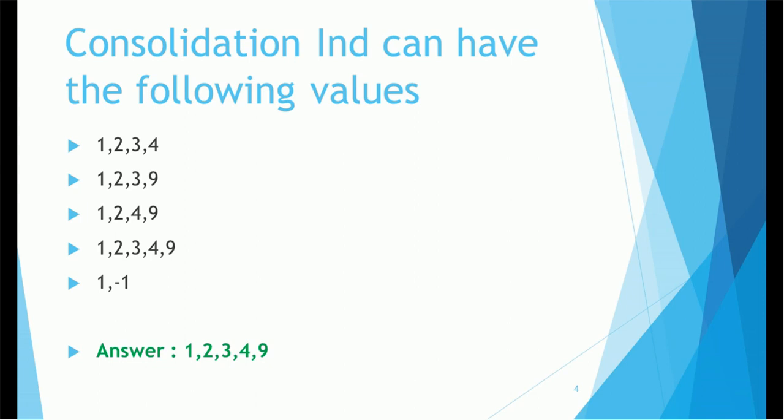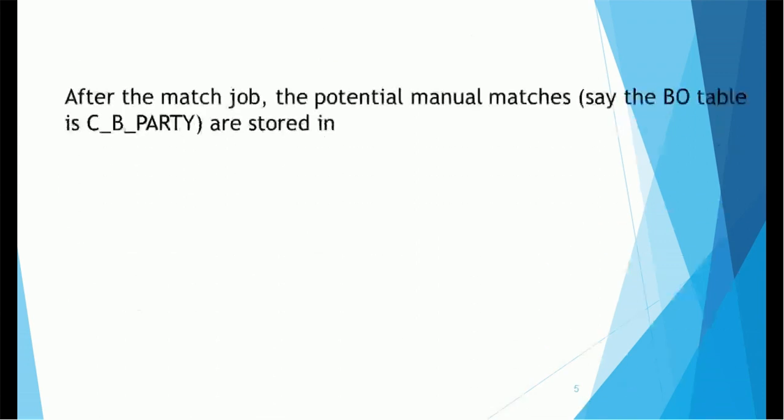The value 9 is specifically when the data steward keeps the record on hold — the consolidation indicator goes to the ninth state. The other statuses: 4 is for new record, 3 is ready for merge, 2 is record matched, and 1 is consolidated record.